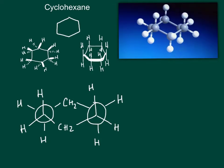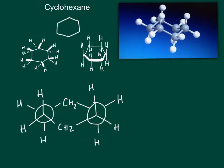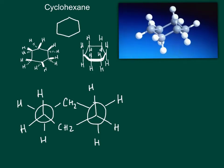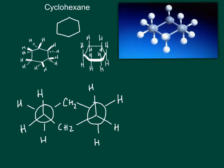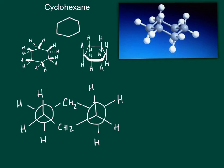However, when we build a model of cyclohexane, we see that the ring is not planar, but takes the same zigzag shape we expect in a straight chain of carbons with bond angles of 109.5 degrees.